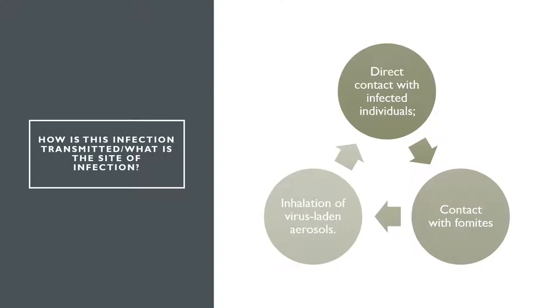The influenza virus is transmitted through droplets transported in the air. These droplets are called aerosols. When they are breathed in, they enter the upper respiratory tract where they initiate infection.